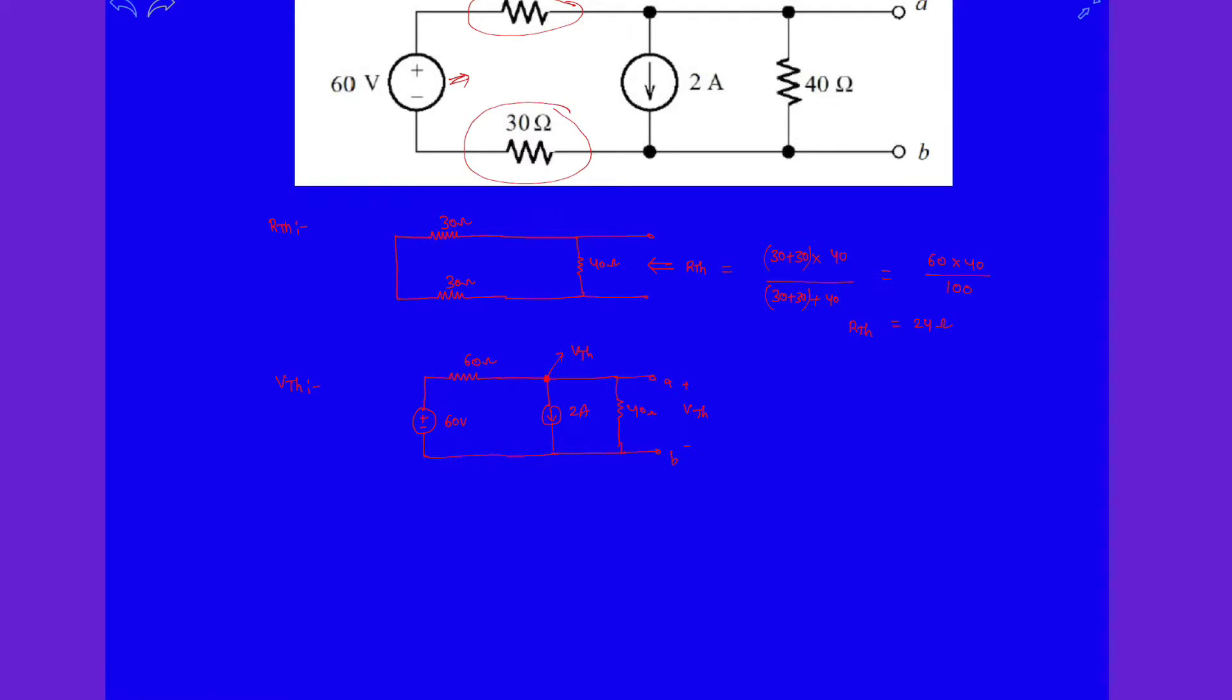This is actually a single node circuit. Let's apply KCL at node V_th. V_th minus 60 volt over 60 ohm plus V_th over 40 ohm plus 2 amps equals zero.